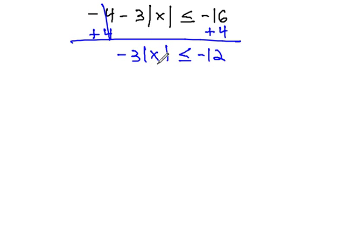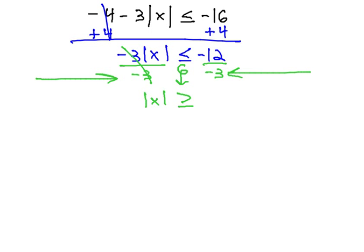Finally, we can get rid of the negative 3 by dividing both sides by negative 3, which will give us the absolute value of x is greater than or equal to 4, because we must flip the inequality whenever we divide by a negative. Now we finally have that absolute value alone. Now is the only time we can address the absolute value.